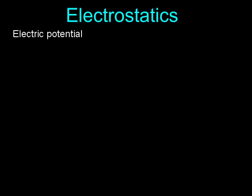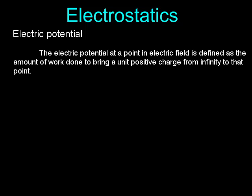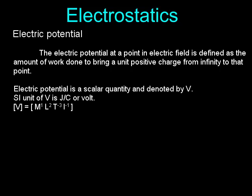Electric Potential: The electric potential at a point in an electric field is defined as the amount of work done to bring a unit positive charge from infinity to that point. Electric potential is a scalar quantity denoted by V. SI unit of V is J/C or Volt. Dimensions of V = [M¹L²T⁻³I⁻¹].